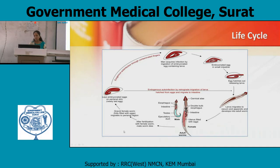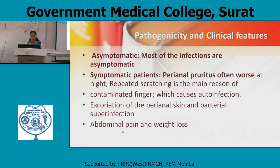Cycle is repeated. Pathogenicity, clinical symptoms and signs: most patients are asymptomatic. Perianal pruritus at night and repeated scratching leads to contamination, which causes autoinfection, excoriation of the perianal skin, and bacterial superinfection. Abdominal pain and weight loss may also occur.